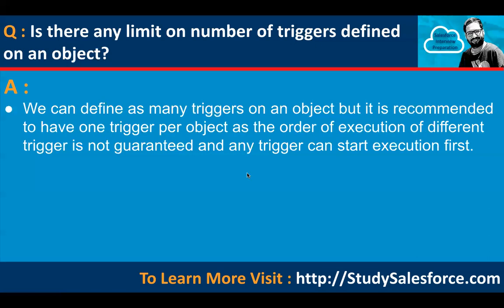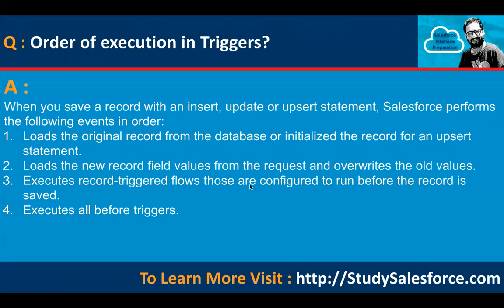Is there a limit on the number of triggers per object? You can define as many triggers as you want on an object, but it is recommended to have one trigger per object because the execution order of multiple triggers is not guaranteed. Instead, write one trigger and define business logic in separate methods across one or more Apex classes. Call those methods from the trigger to manage execution order — you control which method runs first, second, and third.